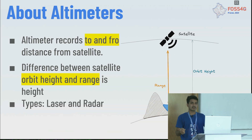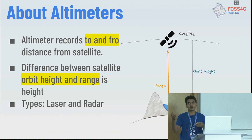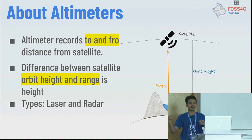There are two types of altimeters: laser and radar. Radar cannot penetrate water, whereas laser can penetrate water, but only to a certain extent.